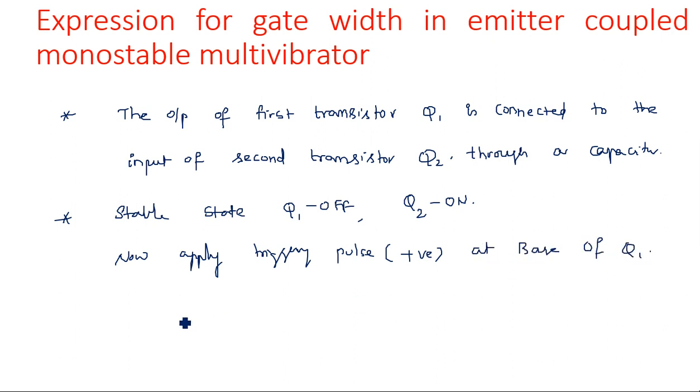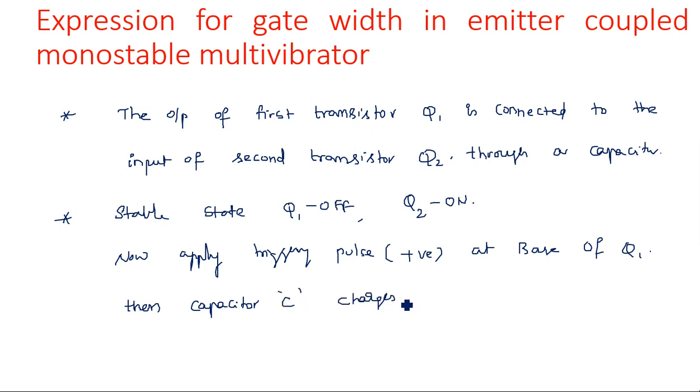When a positive-going triggering pulse is applied at the base of Q1, the capacitor C charges. We need to understand the charging path and how the capacitor is charging.